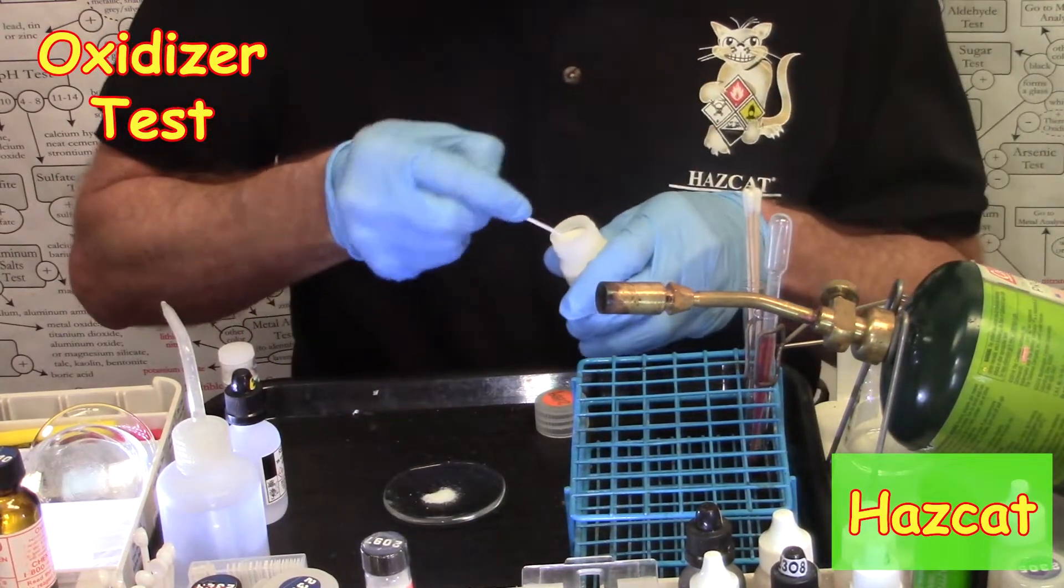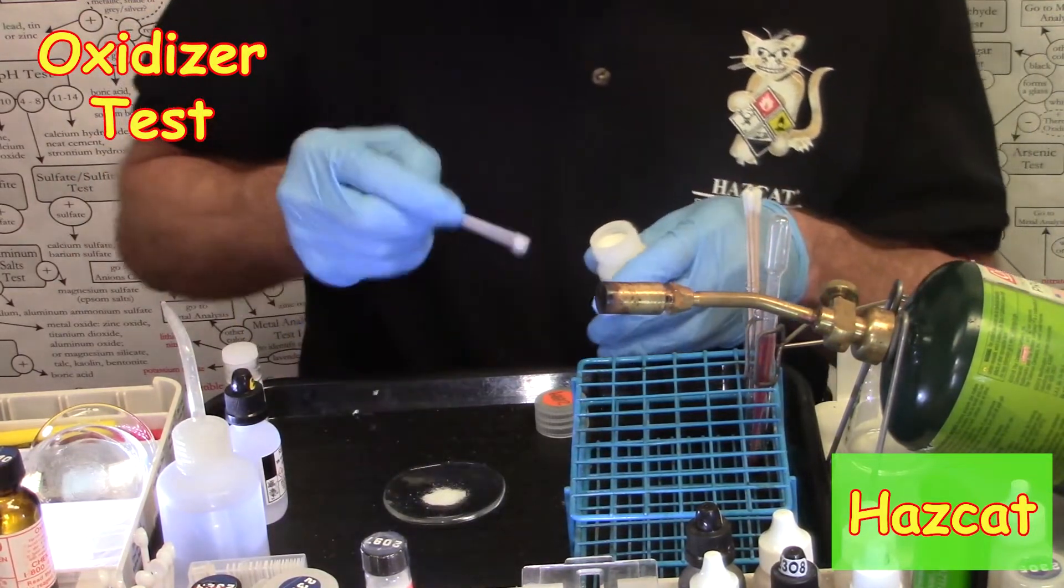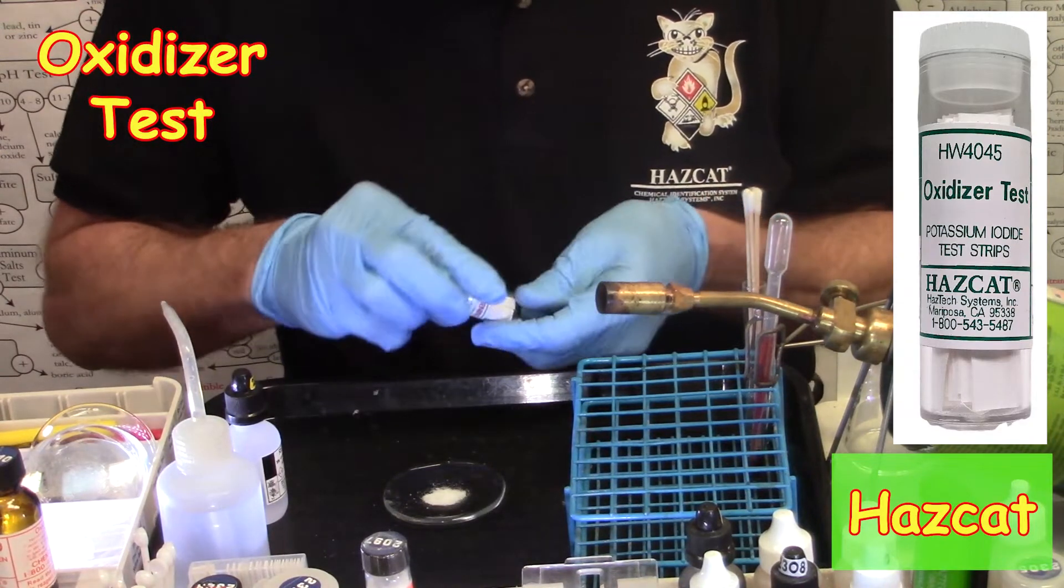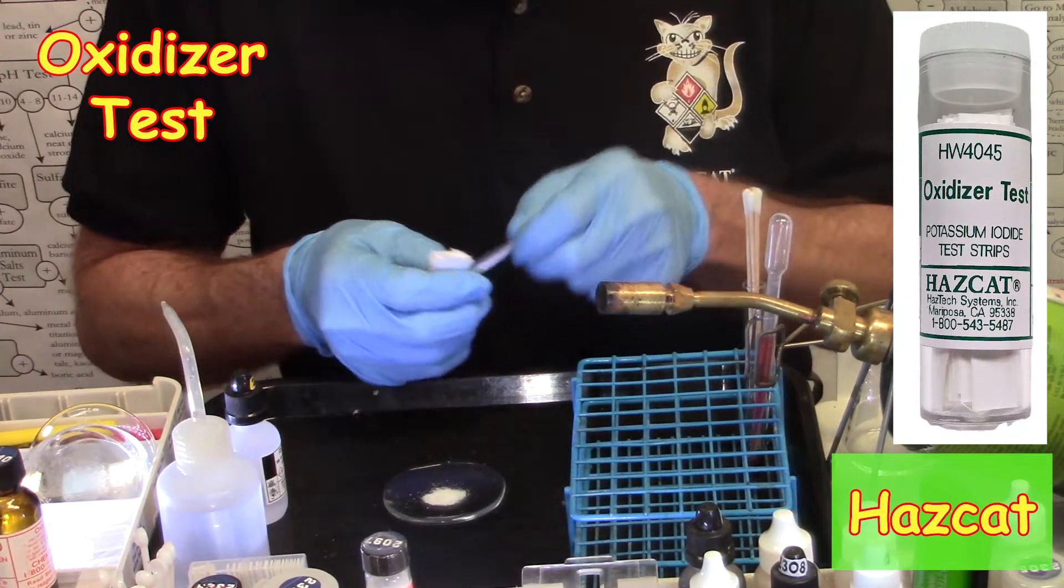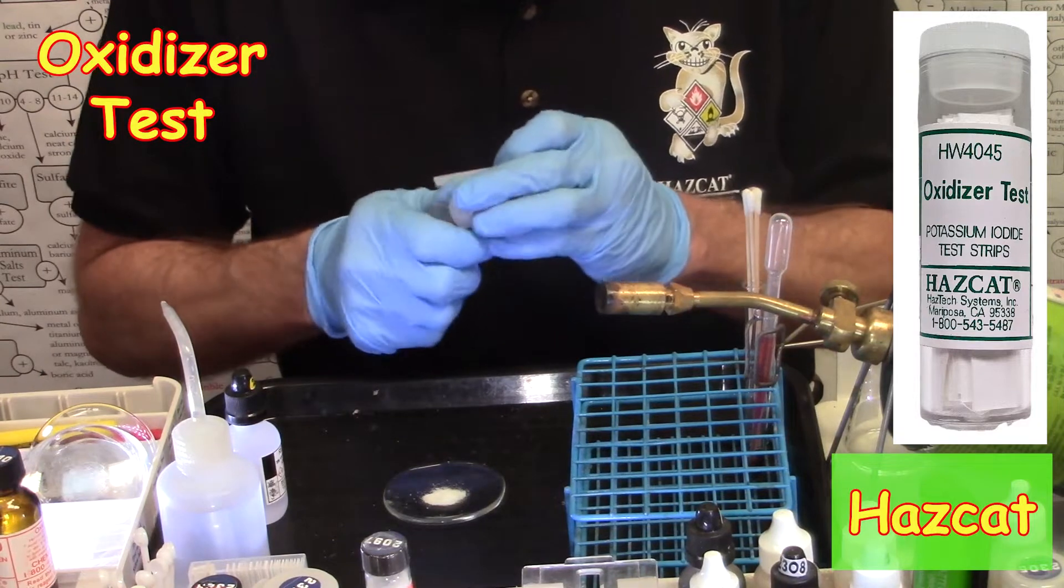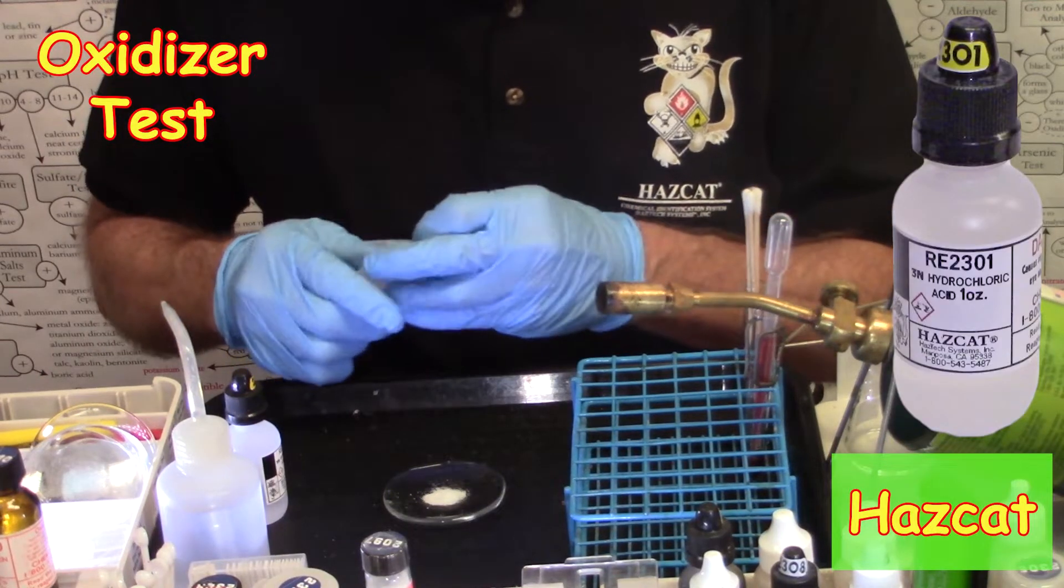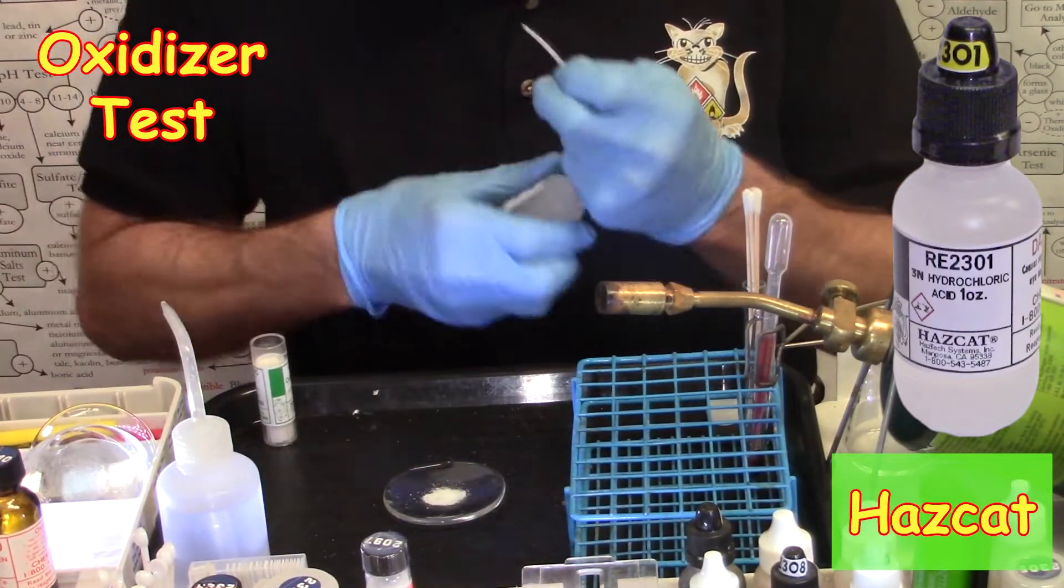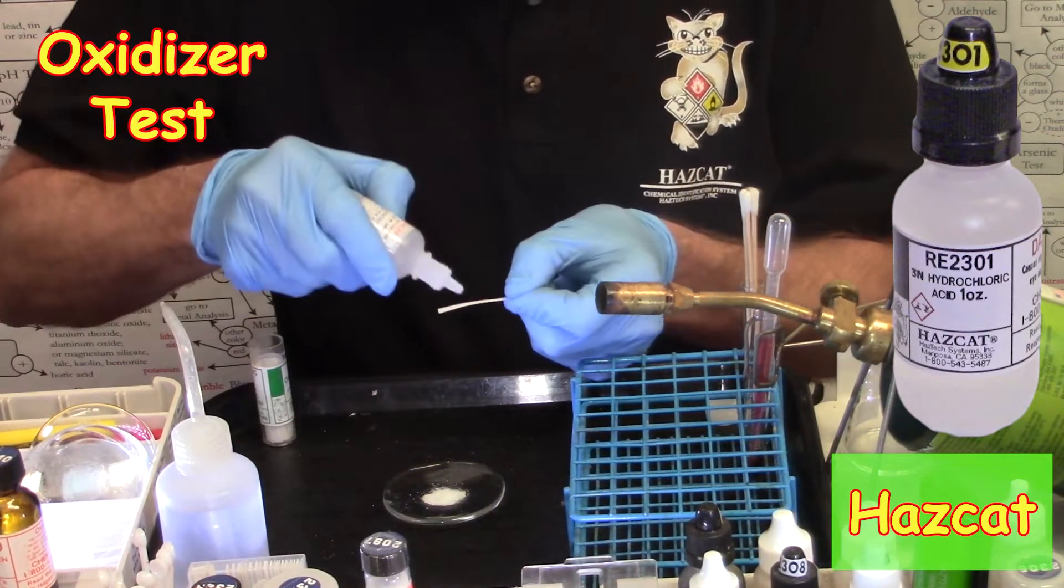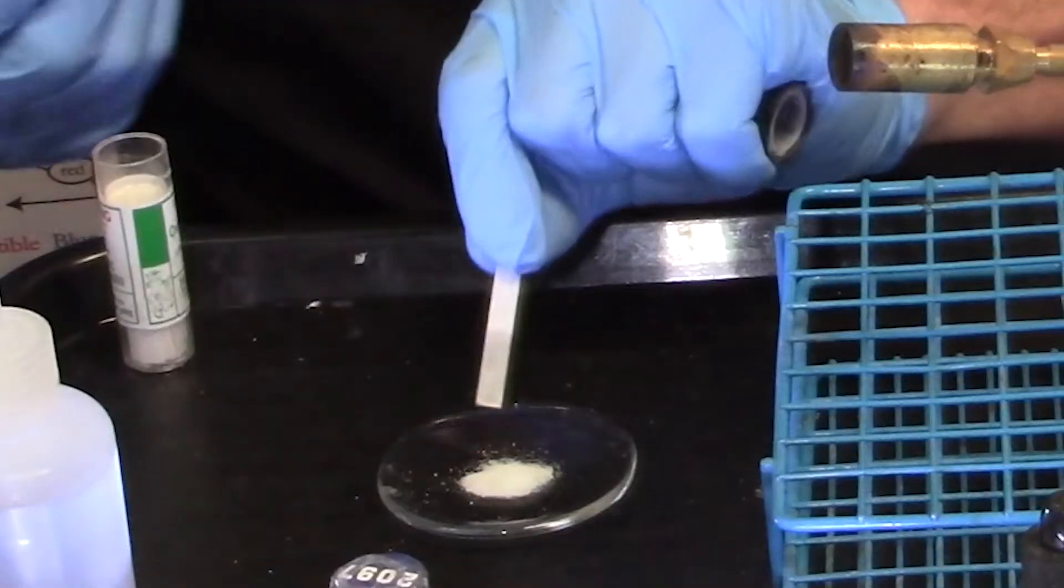One, two. Take a strip of oxidizer test paper. Wet it with two drops of 2301. One, two, and then rub a dub dub.